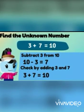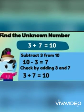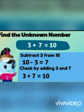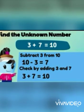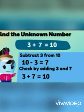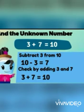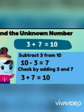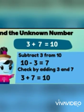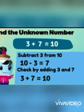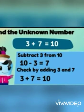Now if we doubt whether our answer is right or wrong, what will we do? We add 3 plus 7 — the answer will be 10. Our answer is 10, which means the question we have solved is right.